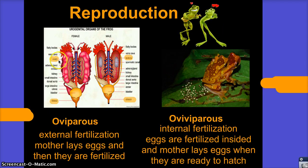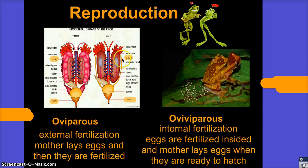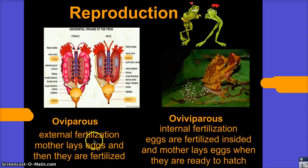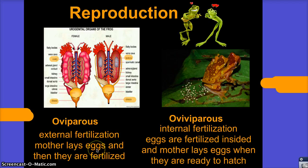So the egg is produced in the ovaries and comes out of the cloaca. The testicle produces the sperm which also comes out of the cloaca. And in oviparous, all of this happens outside of the frog.